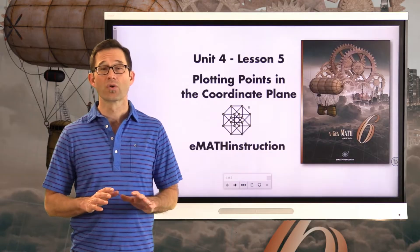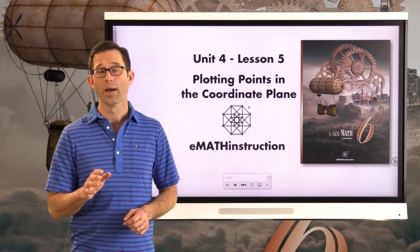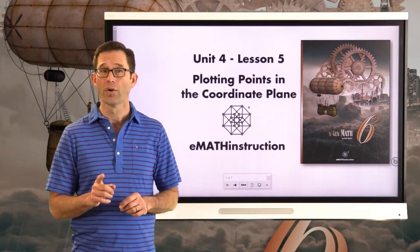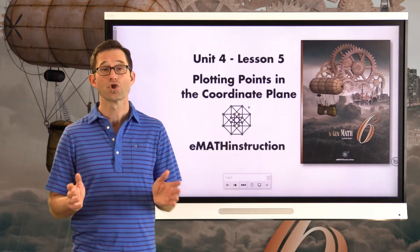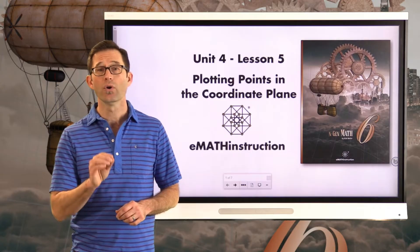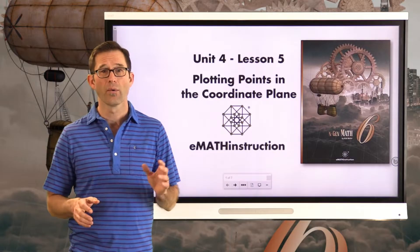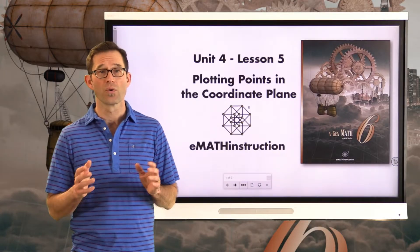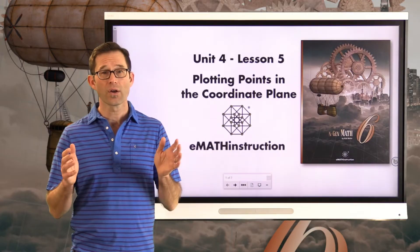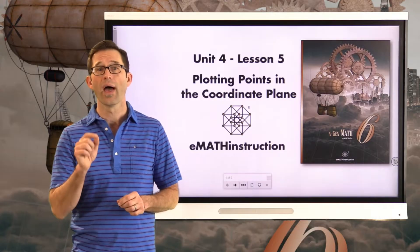This is absolutely a critical lesson. It's one of the more important ones in all of Math 6 because for the first time you're going to be plotting points in a coordinate grid with coordinates that could include negative numbers. Once we have negative numbers at our disposal, which allow us to think about quantities that are less than zero, we can really have a coordinate grid where we can locate points all over the place with respect to an origin.